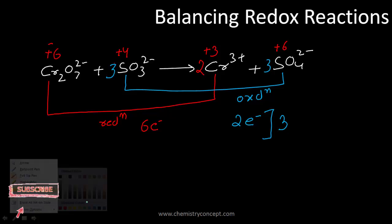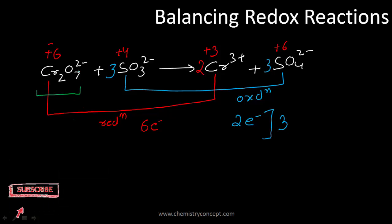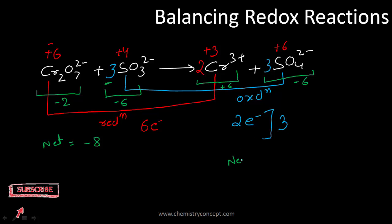The next step is to balance the total charge. On the reactant side, Cr₂O₇²⁻ has a −2 charge, and 3 SO₃²⁻ contributes −6, giving a net charge of −8. On the product side, 2 Cr³⁺ gives +6 and 3 SO₄²⁻ gives −6, so the net charge is 0. To balance, we add 8 H⁺ (protons) to the reactant side, bringing it from −8 to 0.